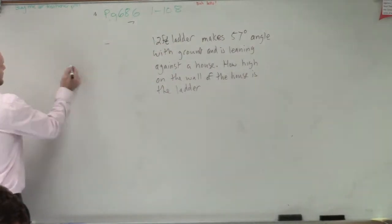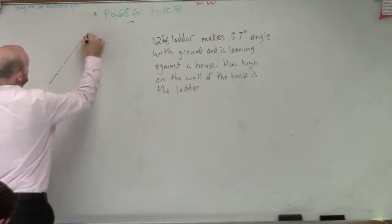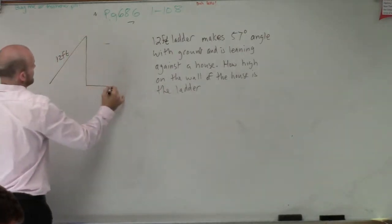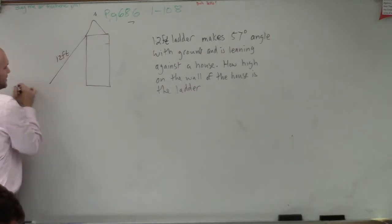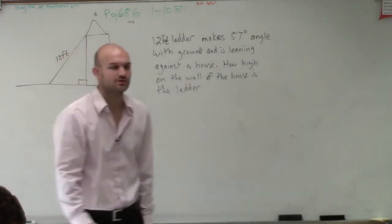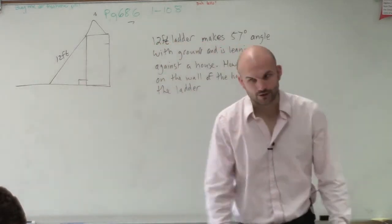So you have a 12-foot ladder, and it's going up against a house. And we know that there's the ground. Now, we know that the ground and the house, they're going to create a 90-degree angle.